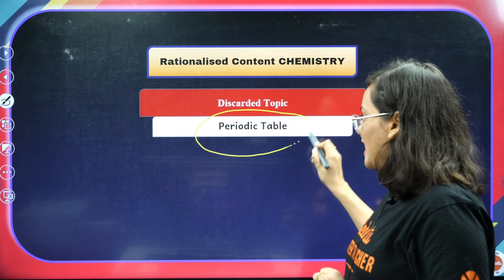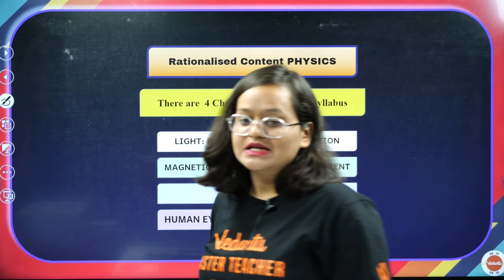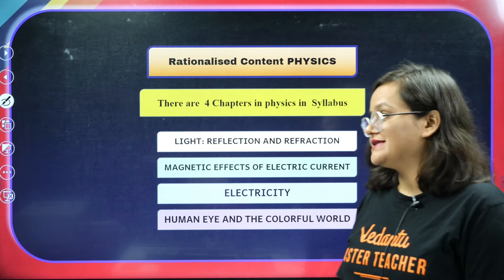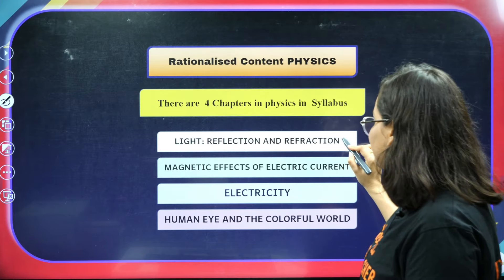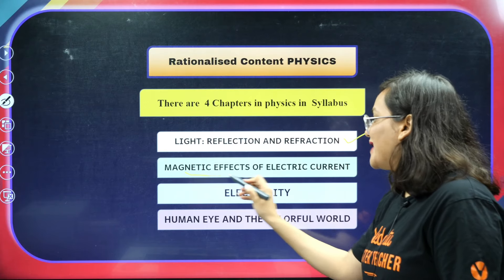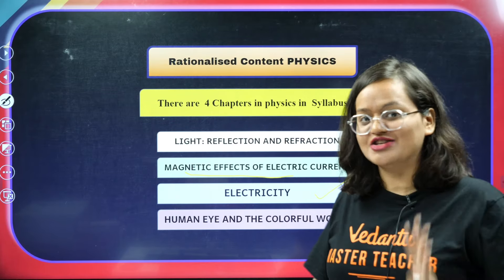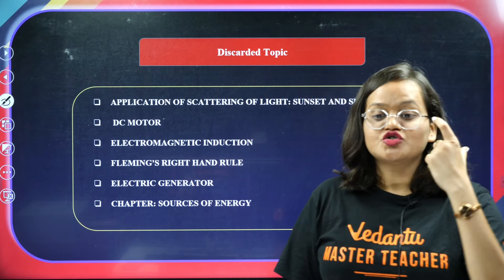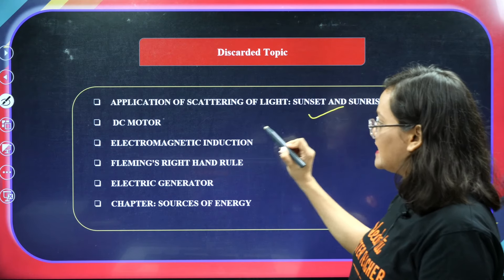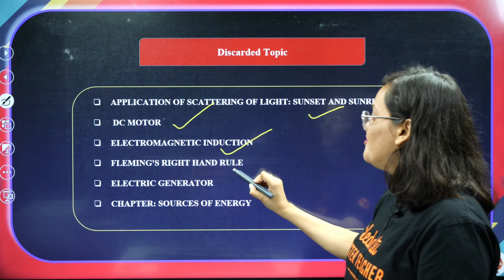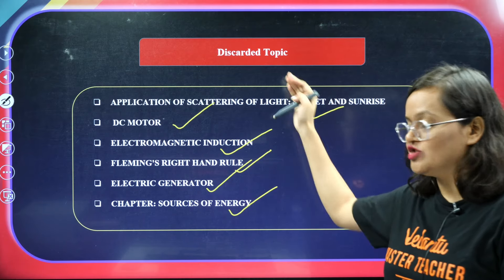The topic that has been discarded is the Periodic Table — your seniors did not study it, and you also don't study it in grade 10. Now let's talk about physics — rationalized content in physics. Which chapters are you going to study? You have four chapters: Light Reflection and Refraction; Magnetic Effects of Electric Current; Electricity; and Human Eye and the Colourful World. Some topics have been removed from physics: application of scattering of light (which includes sunset and sunrise), DC motor, electromagnetic induction, Fleming's right-hand rule, electric generator, and the entire chapter Sources of Energy.